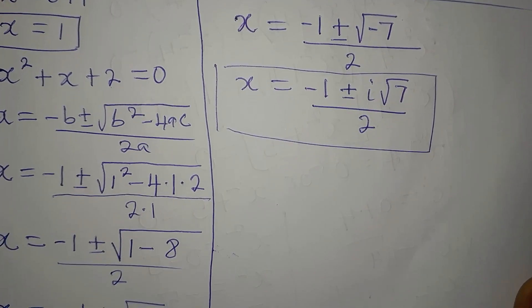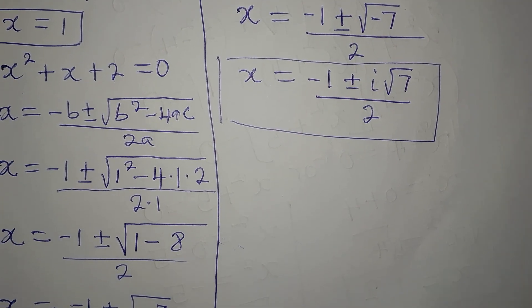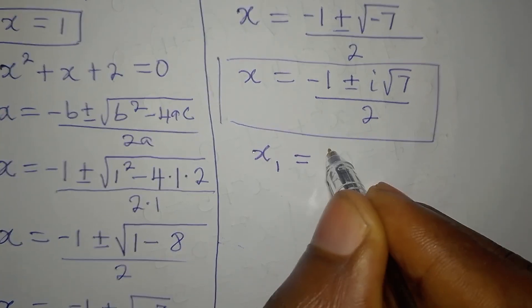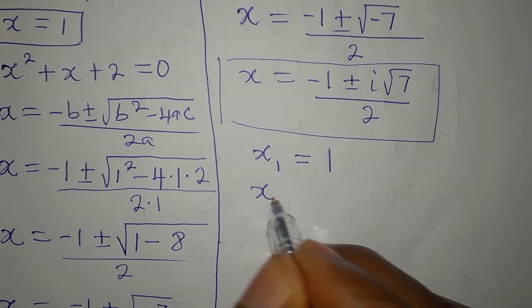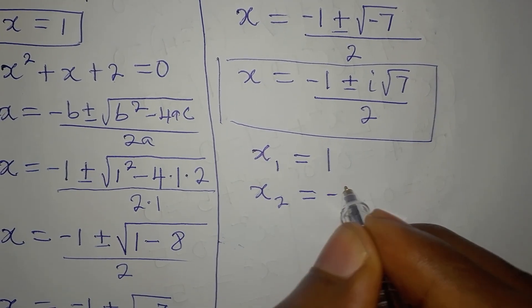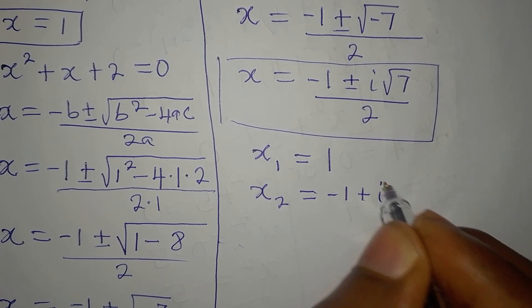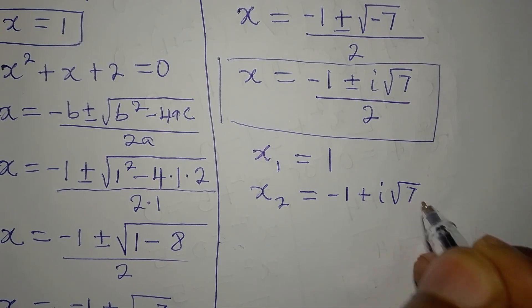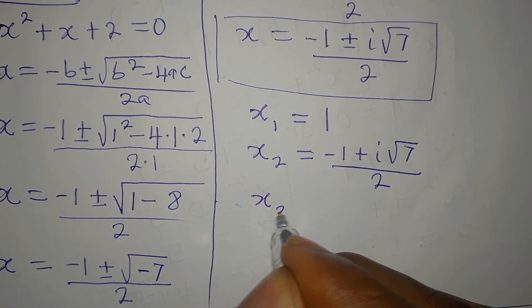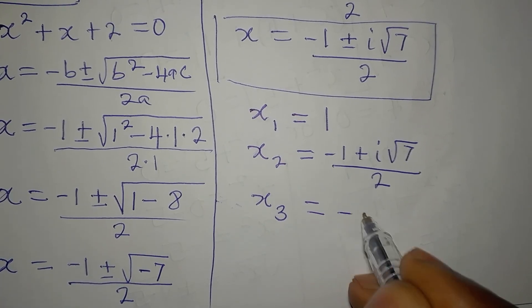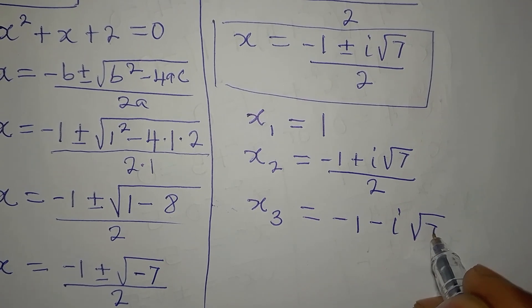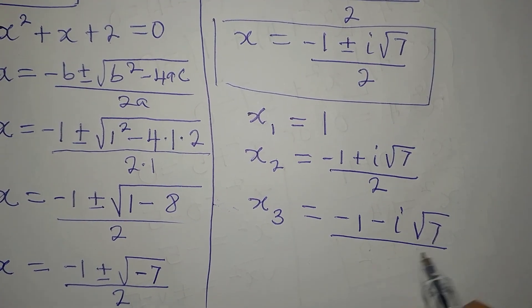So let's bring the three solutions together. We got x1, the first value of x is 1. Then the second value, x2, is minus 1 plus i root 7 divided by 2. Then we have x3 equal to minus 1 minus i root 7 divided by 2.